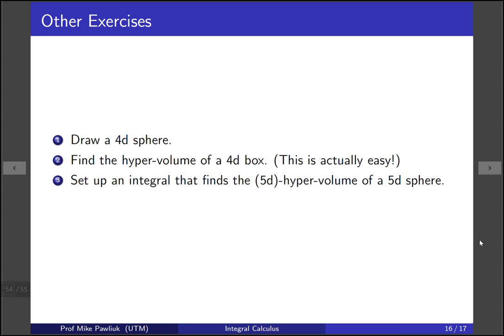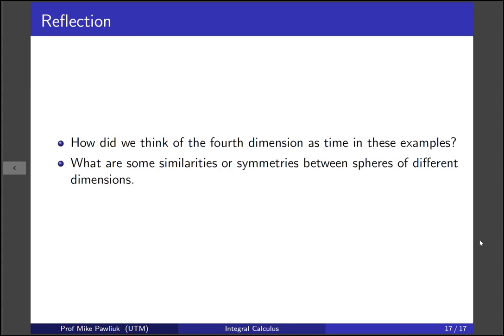Let's end with some exercises and some reflections. Draw a four-dimensional sphere. Find the hypervolume of a 4D box. This is actually surprisingly easy. Set up an integral that finds the five-dimensional hypervolume of a 5D sphere. Doesn't that sound fun? And some reflections. How did we think of the fourth dimension as time in these examples? What are some similarities or symmetries between different spheres of different dimensions? Thank you very much and have a great day.